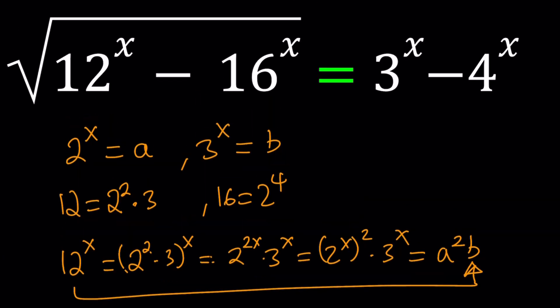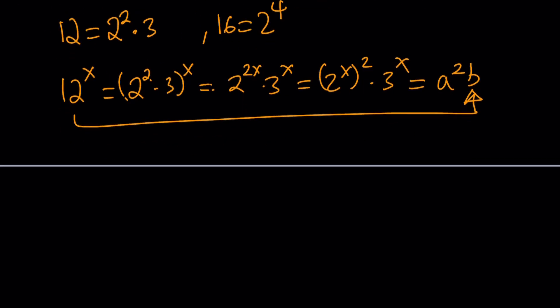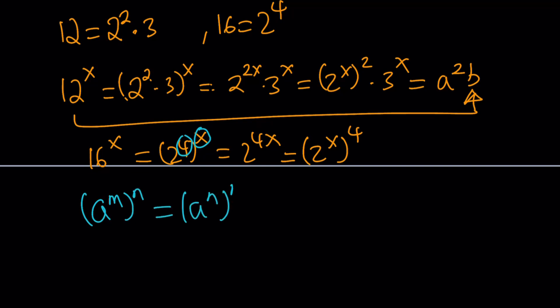From that perspective, 16 to the power x is basically 2 to the 4 to the x, which is 2 to the 4x. And then, of course, the rule says you're supposed to multiply the exponents. But then it also allows you to write this as 2 to the x to the 4. So in other words, these two powers can be switched around. That's a general rule that could be written as a to the power m to the power n is the same as a to the n to the power m. And this is a very helpful property of exponents.